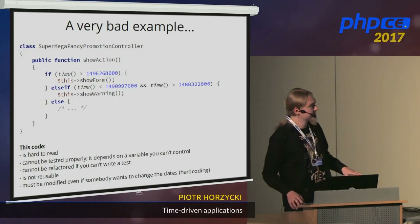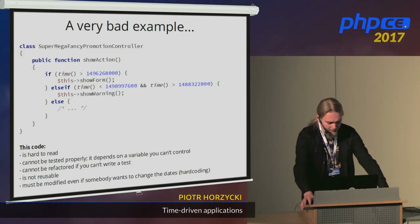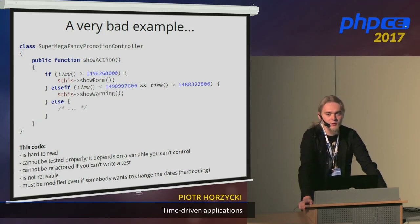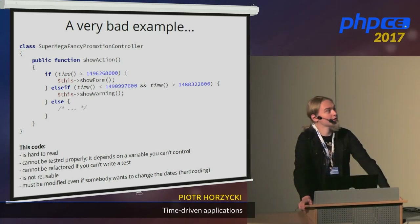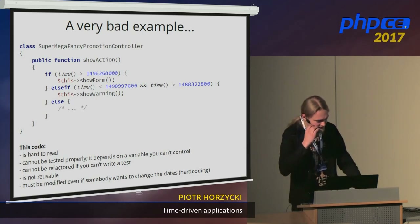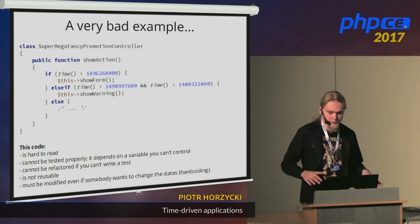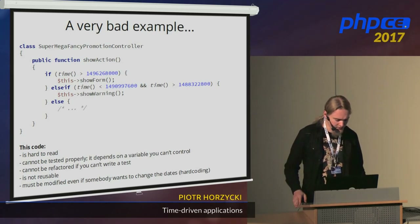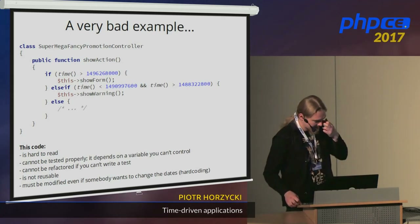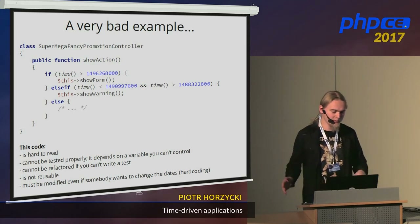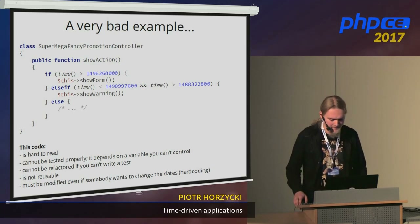This is a direct inspiration for this talk. We had code similar to this in our company's codebase and I had to modify it when new business requirements came to us. What's wrong with this code? There are a lot of things wrong. First of all, this code is hard to read. The code shouldn't be cryptic — it should be clear what the intentions are.